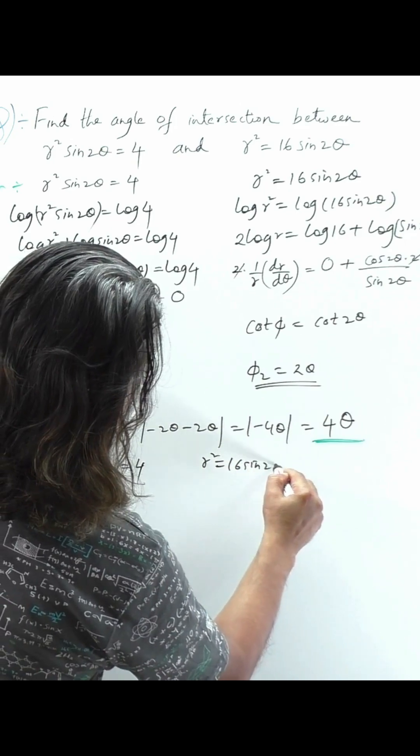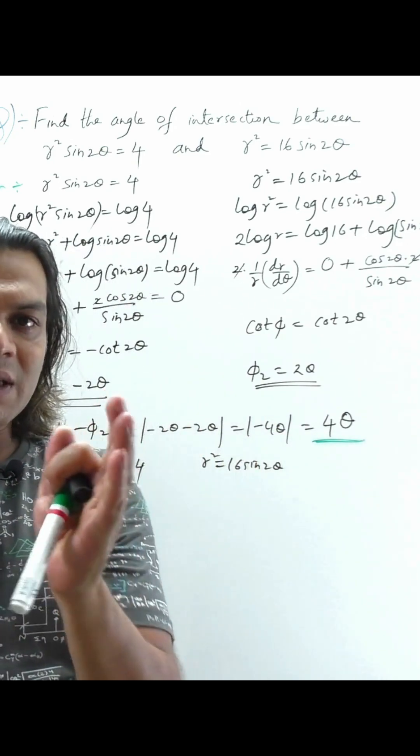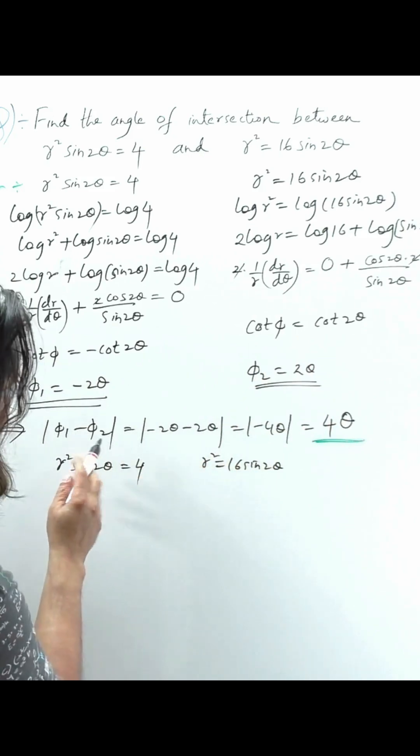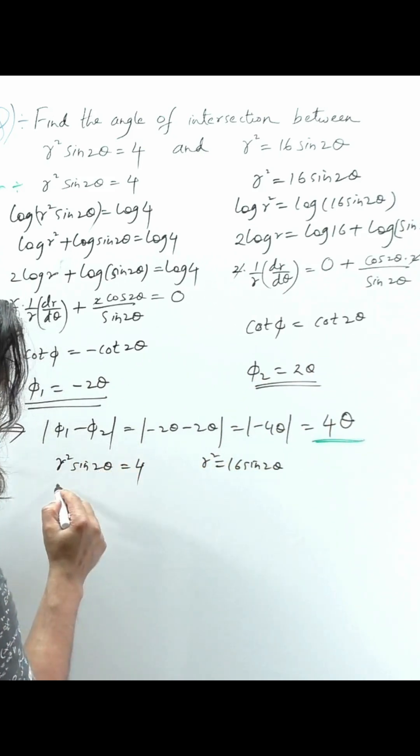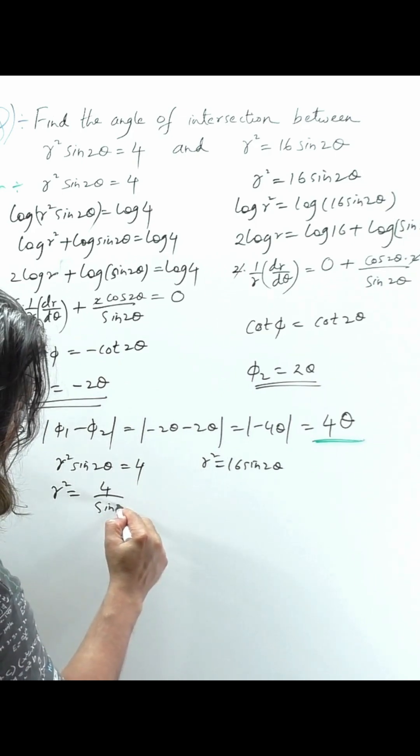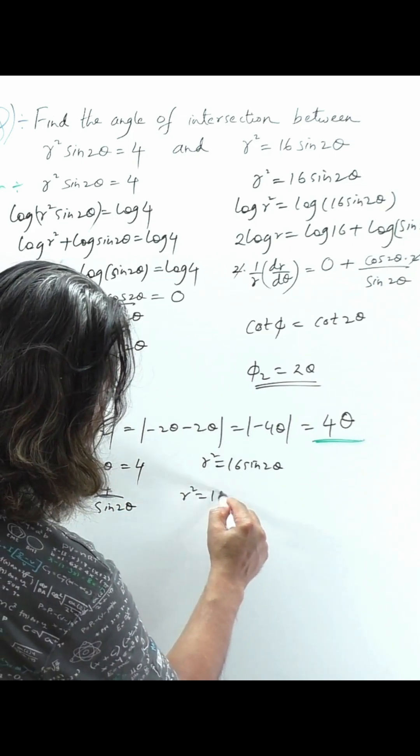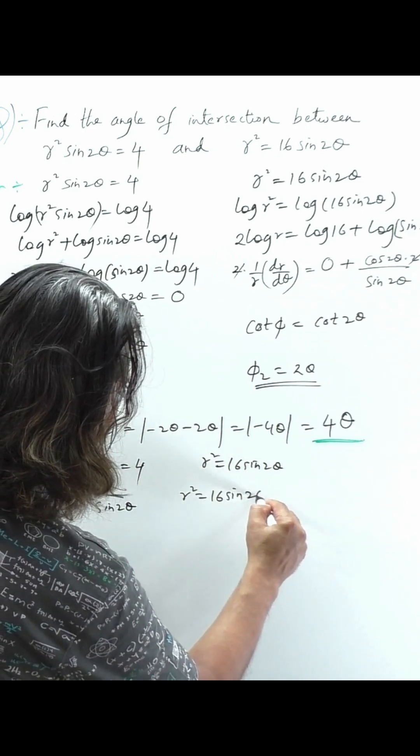I will compare and write both in terms of r² so I can easily compare them. From here r² sin 2θ equals 4 means r² equals 4/sin 2θ. And here r² is equal to 16 sin 2θ.